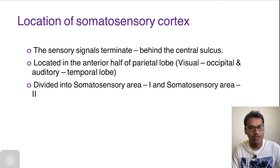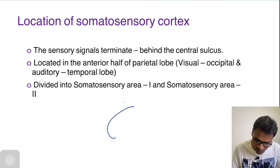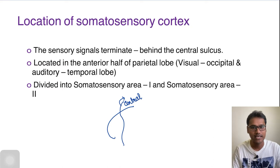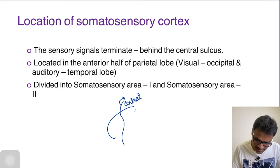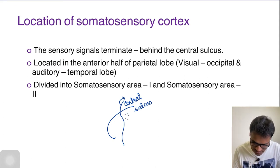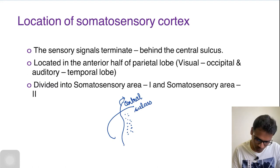Coming to the location of somatosensory cortex — where is it located? Whenever we see the diagram of the brain, there is one major division called the central sulcus which is dividing the brain. This somatosensory cortex is located just behind the central sulcus, and just in front of the central sulcus we will have the motor cortex.